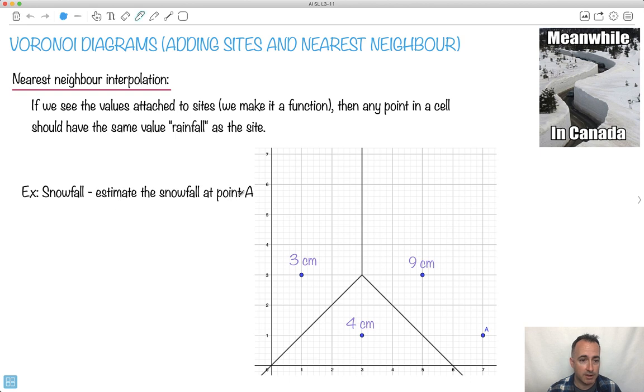So then that becomes extremely simple if you look at this question, and we're trying to find the snowfall at point A. Well, A is nearest to that one, isn't it? Therefore, it's just 9 centimeters. Boom, you're done. That's it.